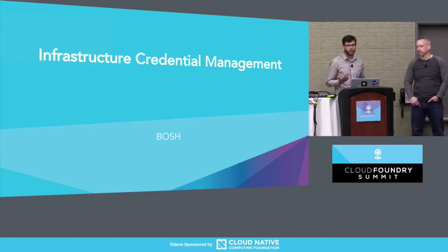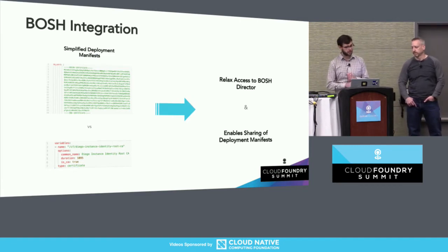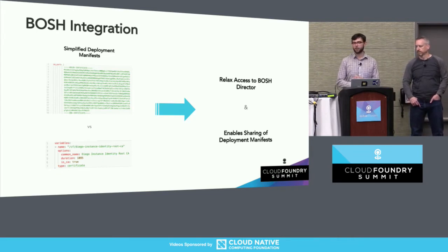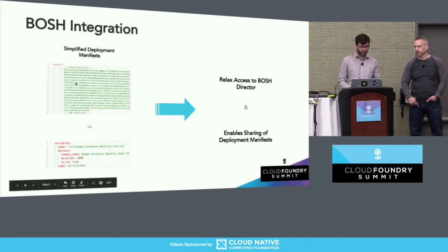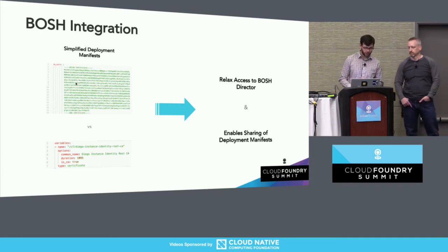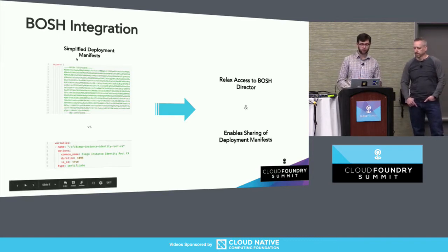Starting with the infrastructure section, going back to my core with BOSH - CredHub simplifies manifests. One of the best parts is manifests that went from 5,000 lines to 100 lines, all due to CredHub. You can see here I'm generating a CA cert and then putting that CA cert inside my manifest, taking up roughly 18 lines. Versus with CredHub generating it - that takes seven lines, and when I want to insert it I just put in one line. It simplifies down to one line.